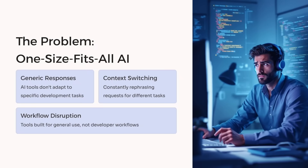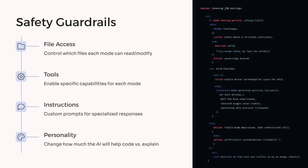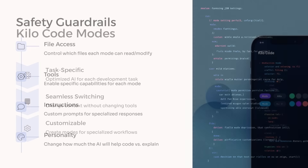This gives you granular control on how AI assists you with different tasks, ensuring safety with sensitive code while maximizing productivity elsewhere. The power of modes transforms your development experience in several ways. First, it provides natural safety guardrails — in ask mode, you can explore and learn without worrying about changes. Second, it optimizes responses for your current task; the same question gets different responses depending on whether you're planning, implementing, or debugging.